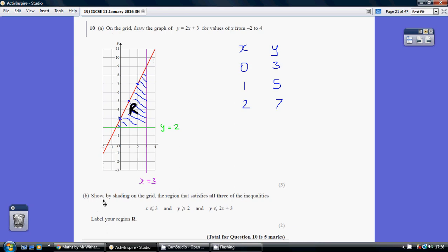Now for part B, we need to shade the region that satisfies these inequalities. Be careful here. To work out the area x is less than or equal to 3, we need to start by drawing the line x equals 3. Be very careful. This is not parallel to the x-axis. x equals 3 is this line going down here.